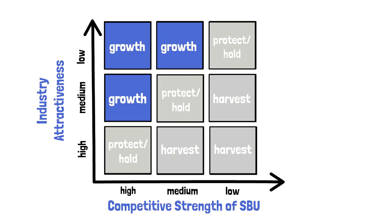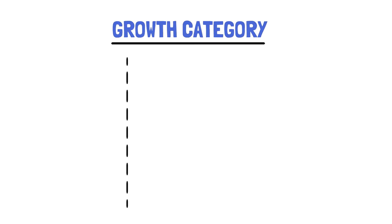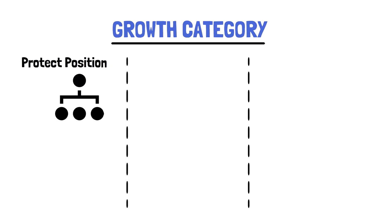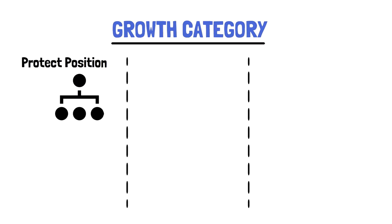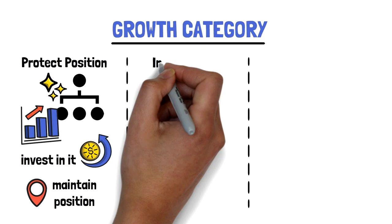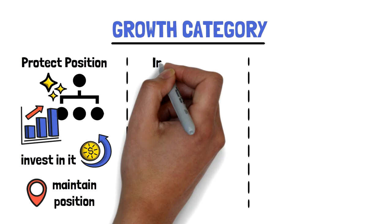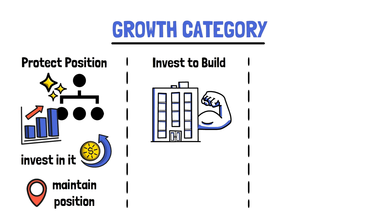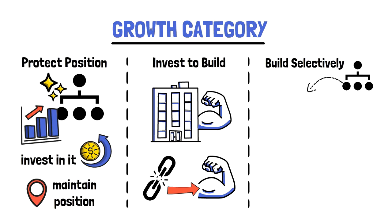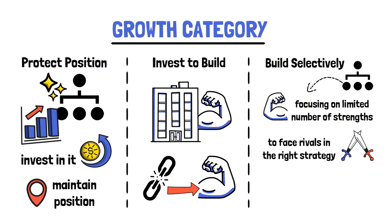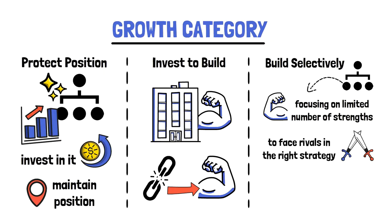The growth category consists of three cells. The first is called Protect Position, representing business units that are doing extremely well and have strong potential — one should invest in such businesses and maintain this position. The second cell is called Invest to Build, where you focus on your company's strengths and make vulnerable areas stronger. Finally, the third cell, known as Build Selectively, represents business units where focusing on a limited number of strengths to face rivals is the right strategy. When there are no more strengths or competitive advantages left, one should strategize withdrawal from the market.